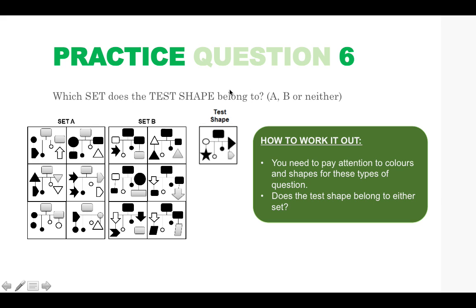So the test shape begins with a black rectangle. So you know it could belong to set B because it starts with a black rectangle. And the colours are exactly the same. So you've got black, white, black, black, white, black. And then the underneath smaller shapes are black, white, black, grey, black, white, black, grey. So we know it's not set A because the colour scheme for these are completely different. So the answer is set B.